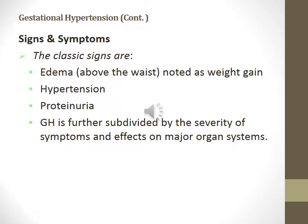Signs and symptoms of gestational hypertension. The classic signs are edema above the waist, noted weight gain, hypertension, and proteinuria. Gestational hypertension is further subdivided by the severity of the symptoms and the effects on the major organ systems.